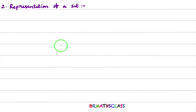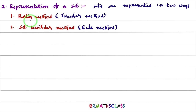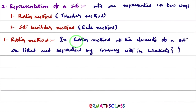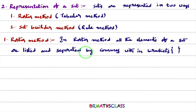The second synopsis is representation of a set — how we represent a set. The first method is the roster method, also known as the tabular method. The second method is the set builder method, also known as the rule method. In roster method, all the elements of a set are listed and separated by commas within curved brackets.